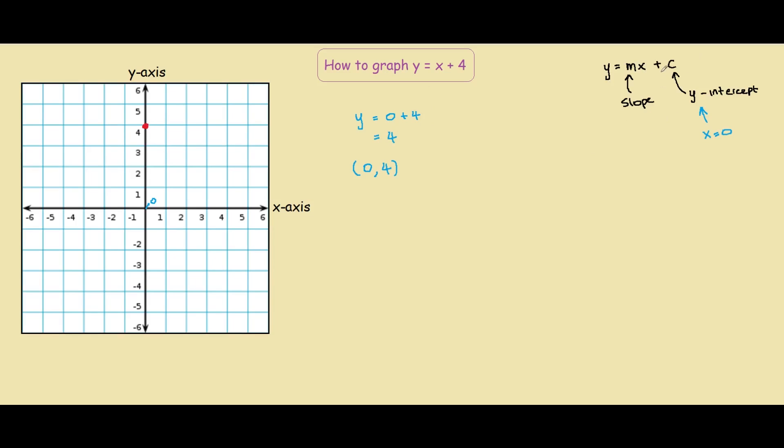Our next task is to find the slope of the line. In this case, it's quite tricky because you don't actually realize the m is a 1 here. This y equals x plus 4 is basically the same thing as saying y equals 1x plus 4. So in this case, our slope equals 1.